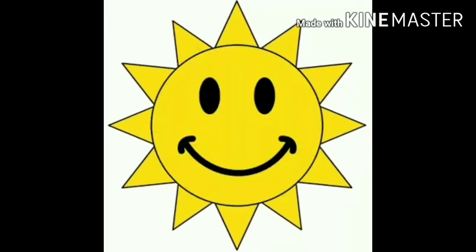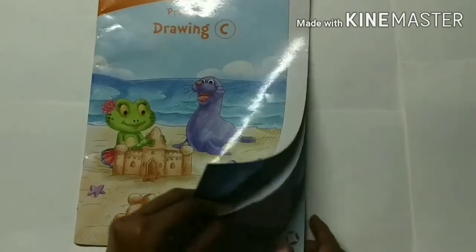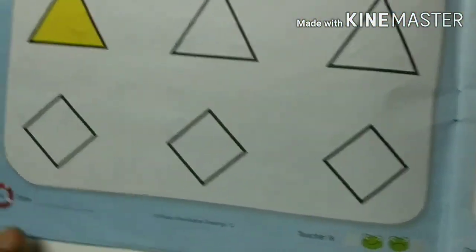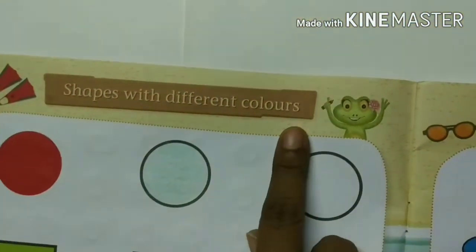This is sun. The sun is yellow in color. Now open our drawing book, page number 4. Write down the date over here. Shapes with different colors.